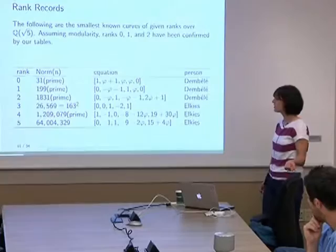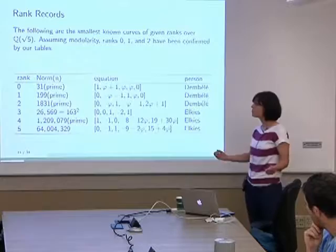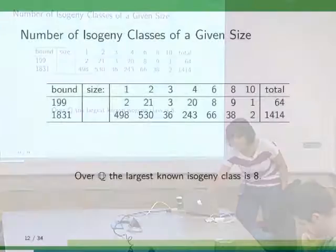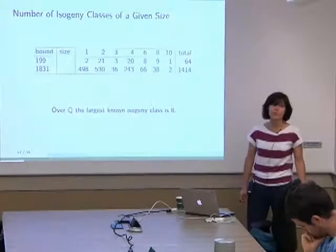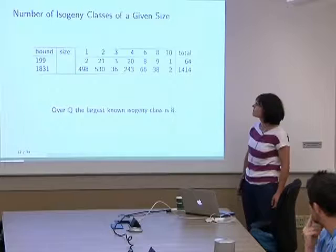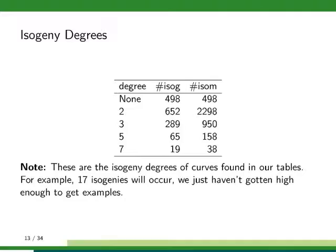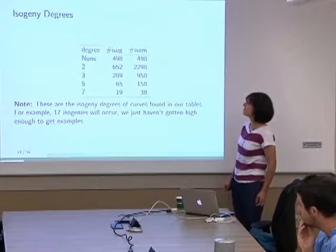What's kind of interesting is that the rank 3 curve is actually over Q, and it would be interesting to see if we could find a smaller rank 3 curve that's actually a prime conductor versus something composite. Also, the number of isogeny classes of a given size is interesting: the largest known isogeny class over Q is 8, but here we have 10.